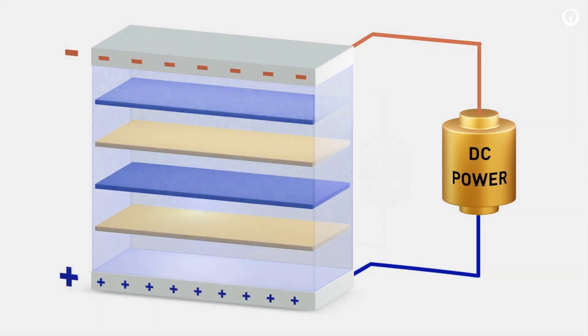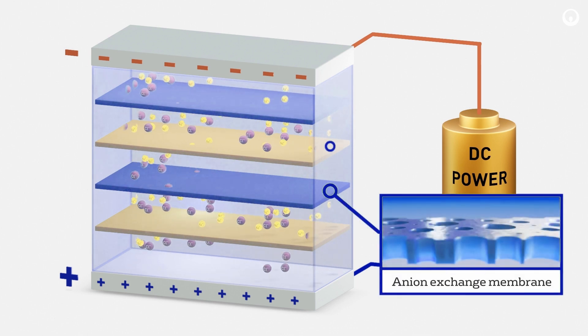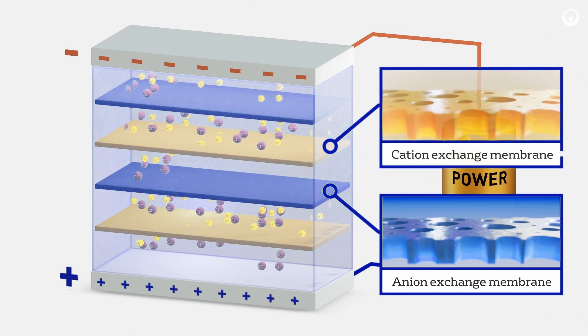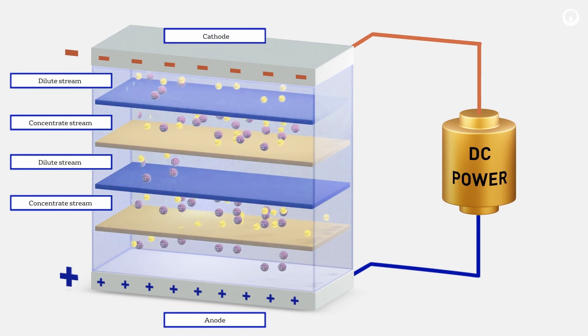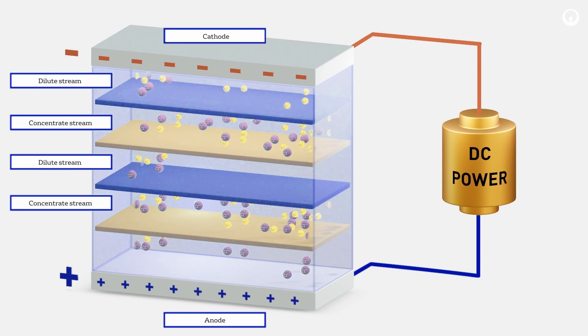Electrodialysis is an advanced membrane technology that utilizes this ion movement to desalinate water. The ions move through selective ion exchange membranes, which only allow either cations or anions to pass through them. By alternating these membranes with spacers between them, it creates two separate streams: a desalinated stream and a concentrated salt stream.